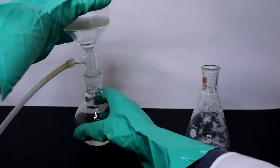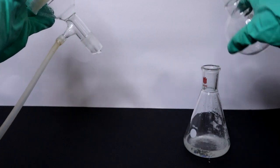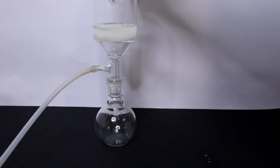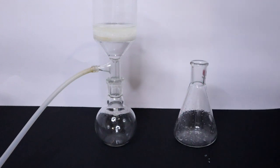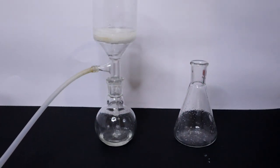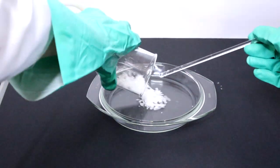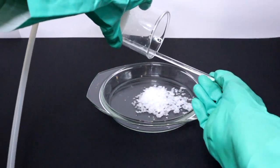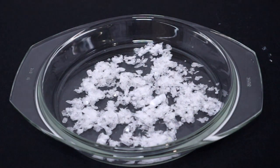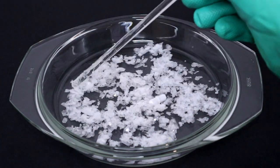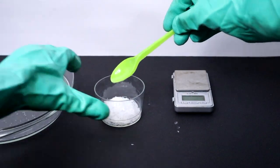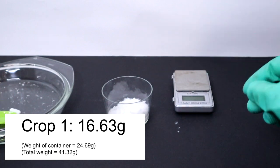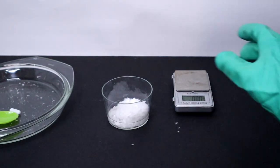To not add any additional water, I rinsed the reaction vessel with the filtrate. The crystals were then dried on the hot plate on low heat and weighed. The first crop of crystals came out to 16.63 grams, but fortunately there is still more product to recover from the filtrate.